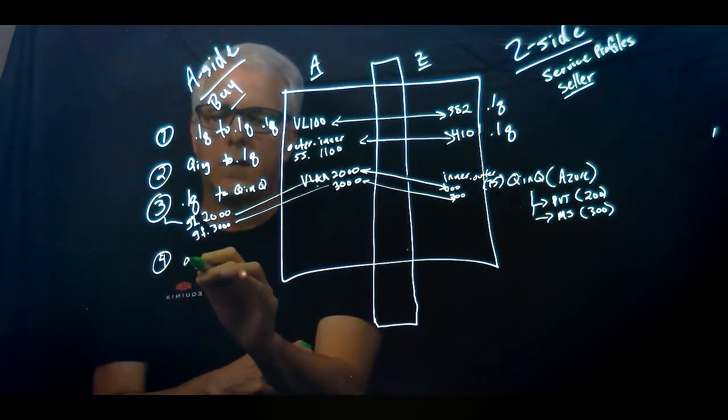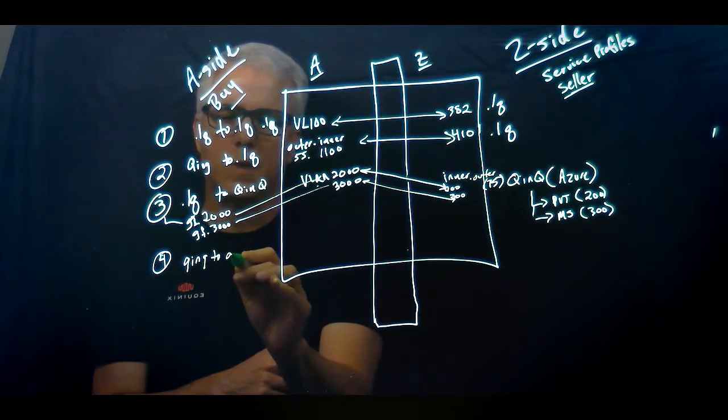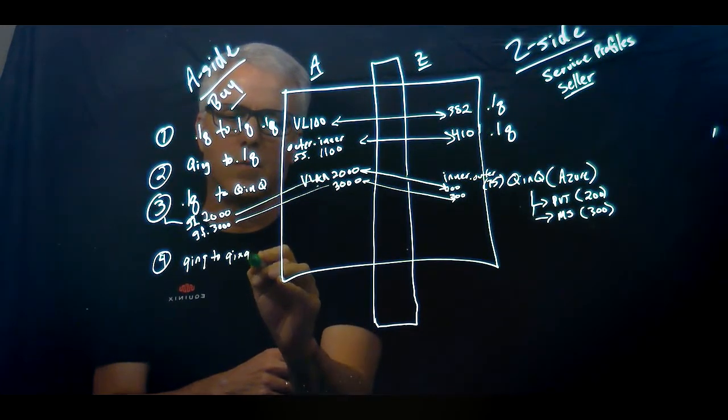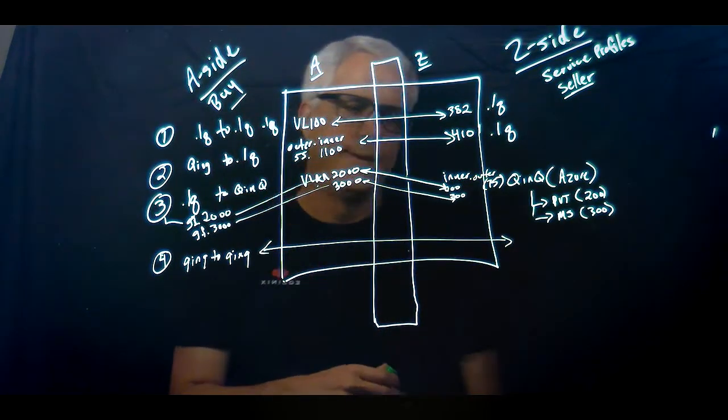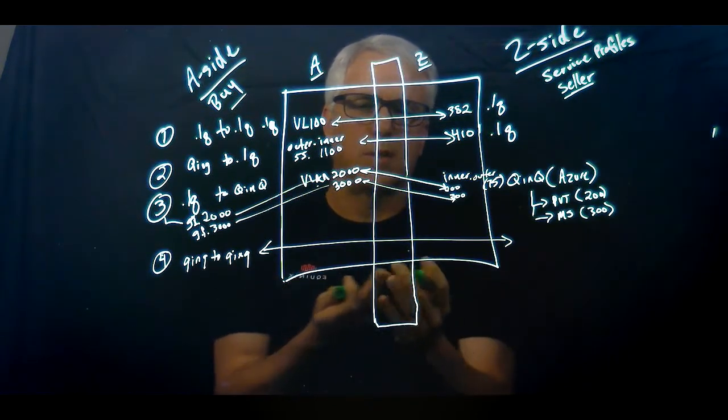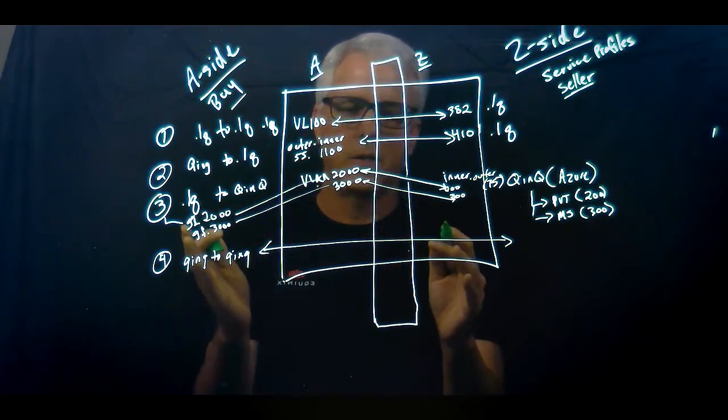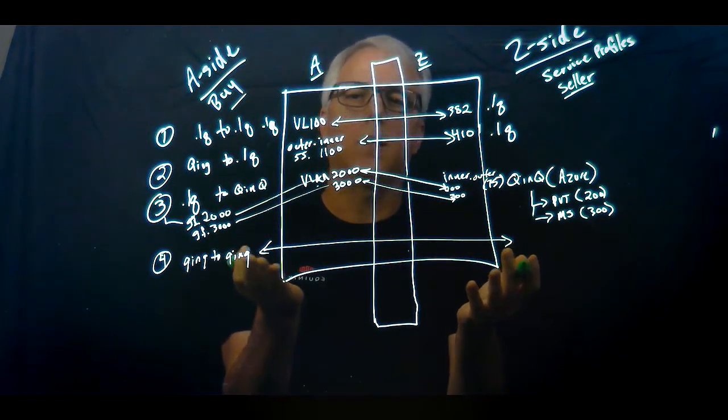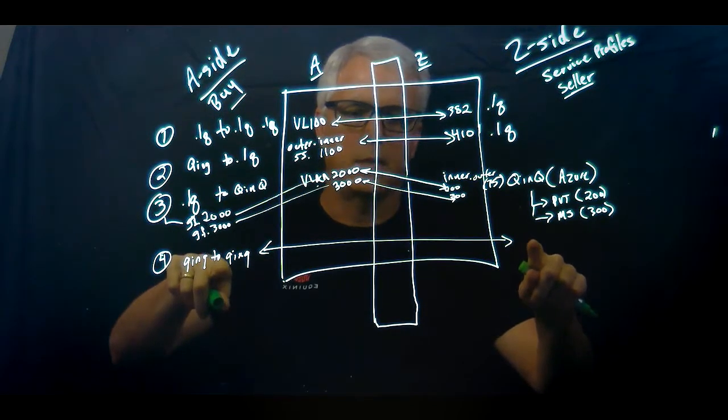The fourth scenario is Q&Q to Q&Q. And basically, Q&Q to Q&Q is a tunnel all the way through. You can almost think of it like an access port for the ECX switch. Because the ECX switch, you don't really have to look at anything. It's just going to look at the Q&Q tags or look at the outer tag and not really have to manipulate or do anything with the inner tag. Because I've got the outer tag that I need to map on both sides of the equation.